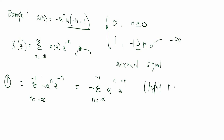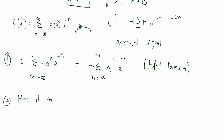The second step would be to make it a causal signal. This might be confusing, but let me make it clear. Since we are presented with an infinite geometric sequence, this form is counterintuitive and difficult to solve. However, if we make it a causal signal and employ the techniques used previously, it would be much easier to do.